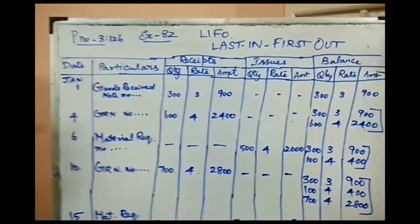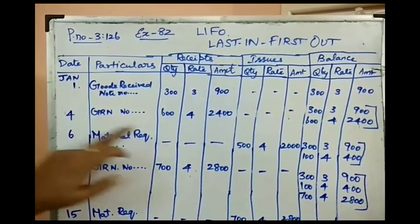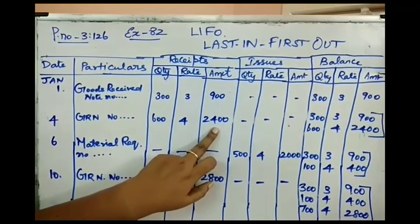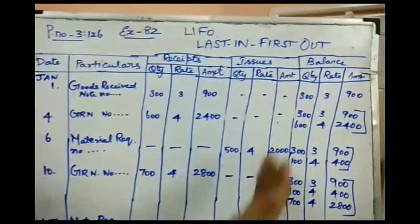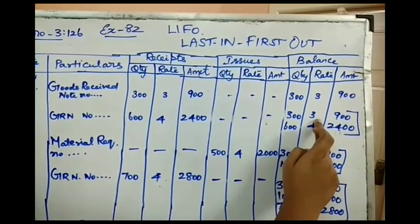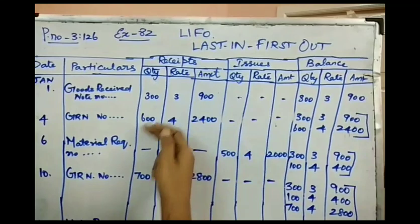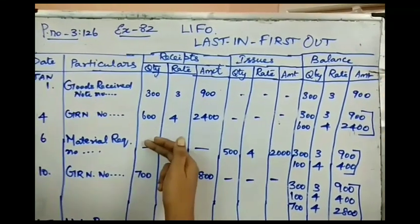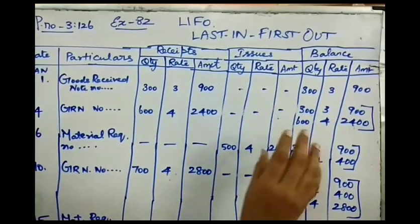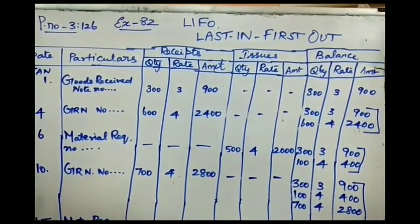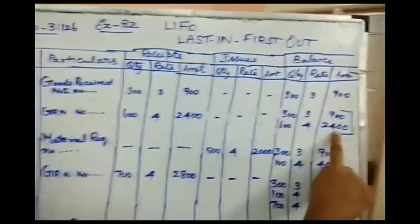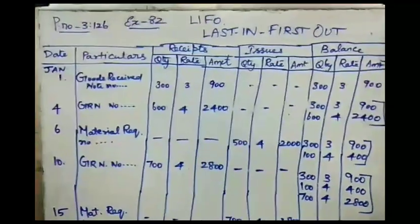The next transaction is on January 4th — again a purchase of 600 units at ₹4 per unit, with a total value of ₹2400. I am keeping the two purchase lots separately: 300 units at ₹3 = ₹900, and 600 units at ₹4 = ₹2400, not combined, for the purpose of LIFO issue tracking.